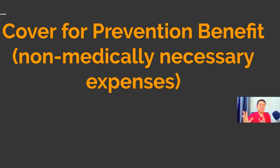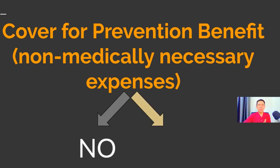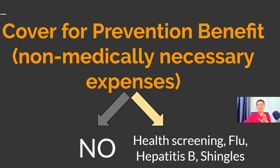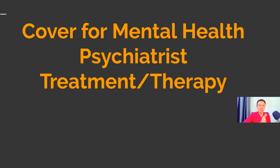The next feature is coverage for prevention benefits. In Malaysia, medical cards normally don't cover any prevention benefit — I would still term that as non-medically necessary expenses. But there are medical cards today, because products have evolved, that cover prevention benefits such as heart screening, flu vaccination, hepatitis B vaccination, and shingles. Every one of these perks does increase your premium cost.